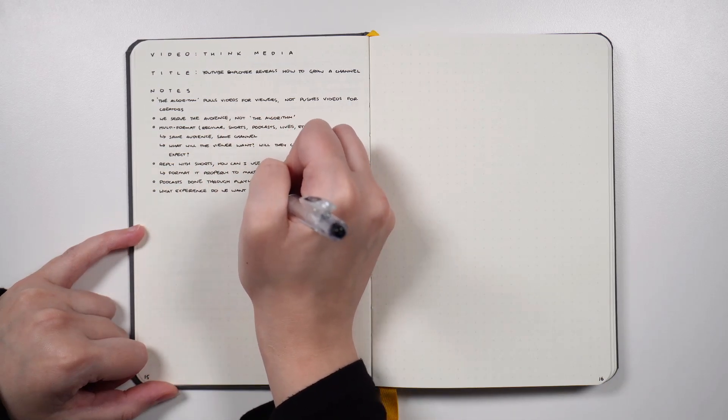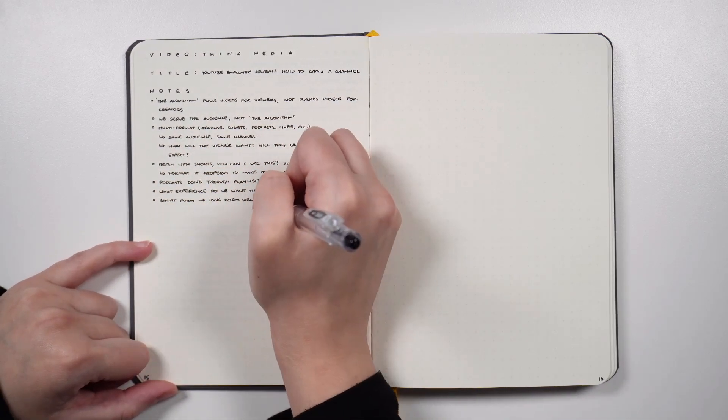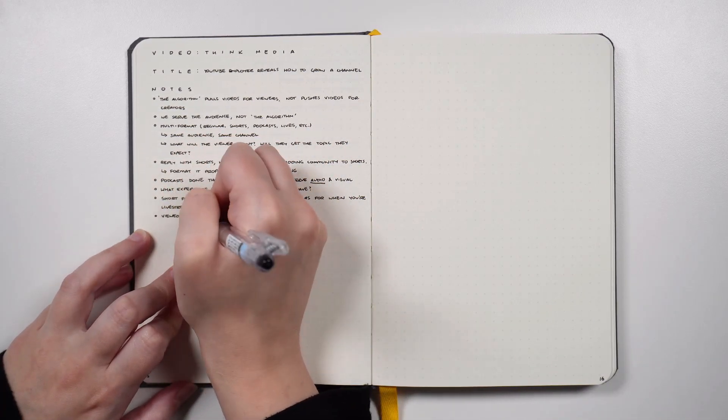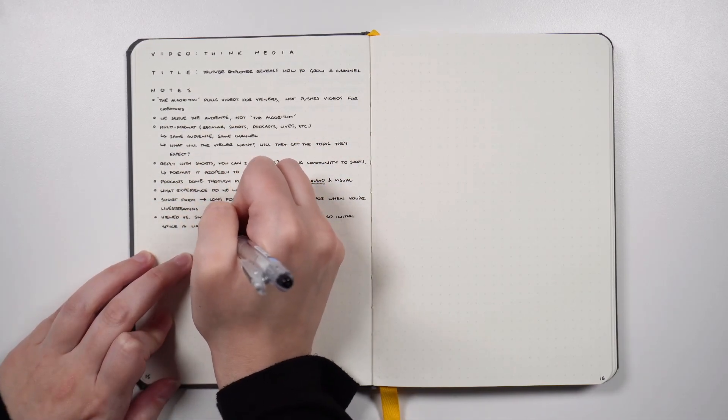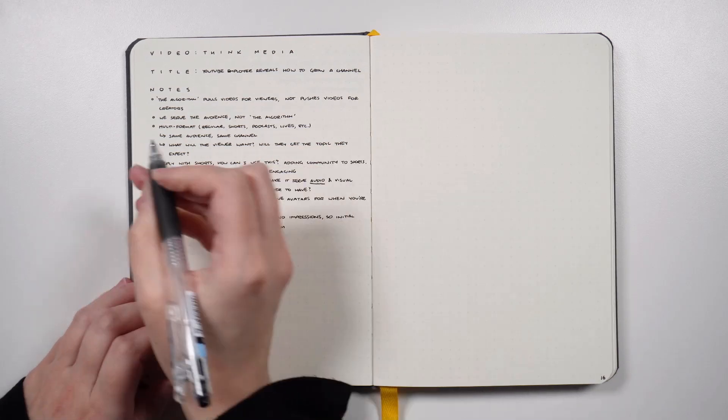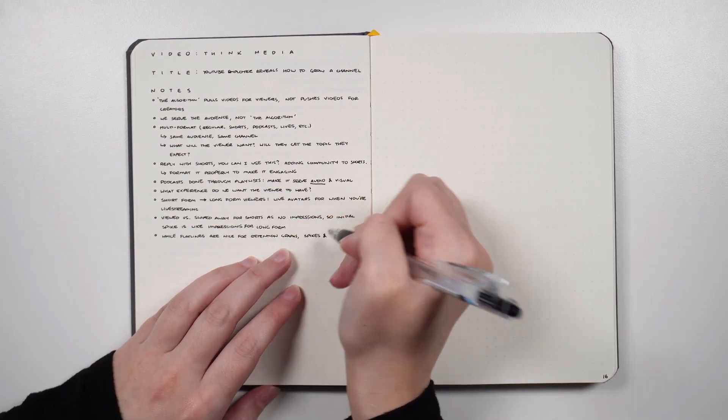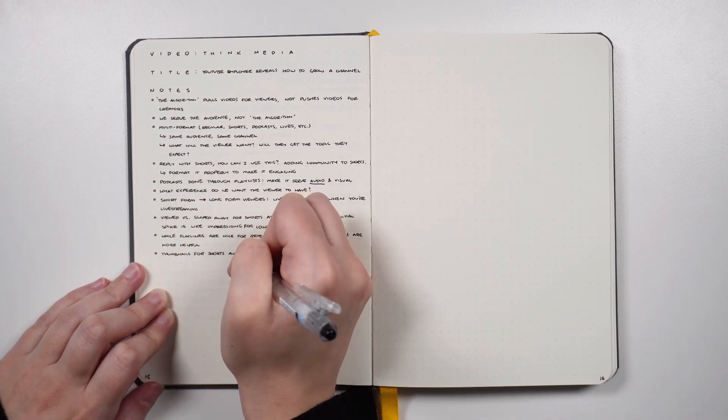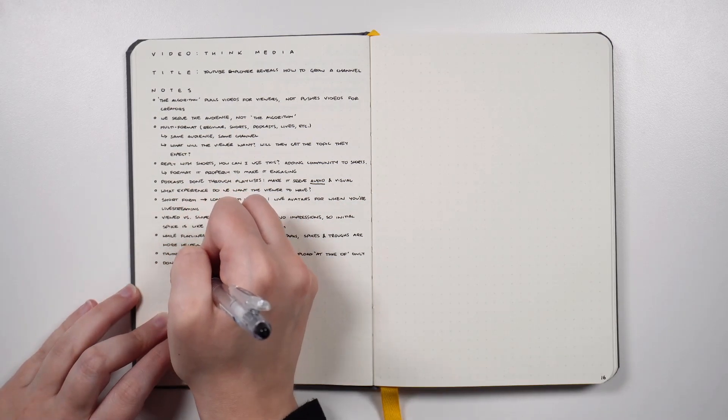Here you can see my process for taking notes in the journal. I start every page off with a title to say what type of media I was consuming and where that media came from, and underneath this I'll put a title for the PD. In this case I was watching a video from Think Media and the title was YouTube Employee Reveals How to Grow Your Channel, which didn't quite fit all on one line so I just said a channel. By including the title it means that if I find any notes that I want to come back to and maybe check out the source material again, I can find that pretty easily.